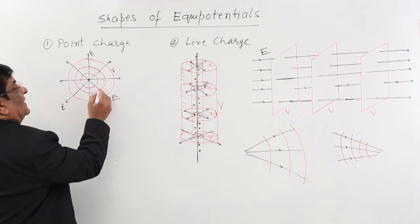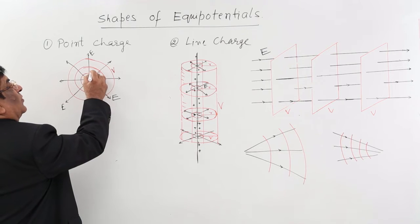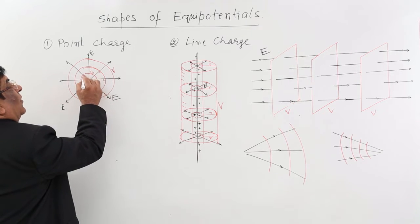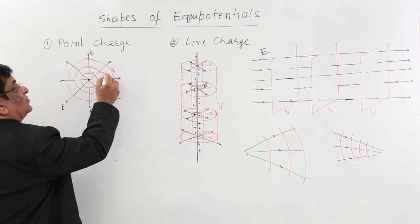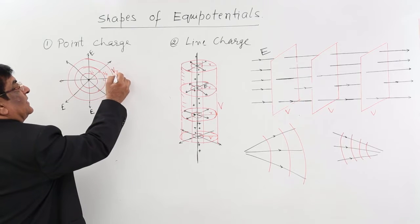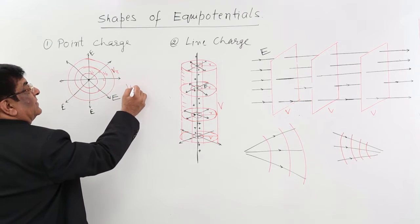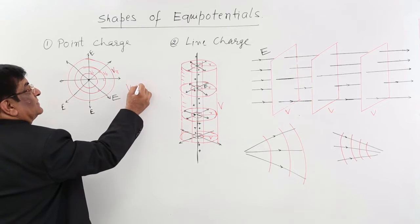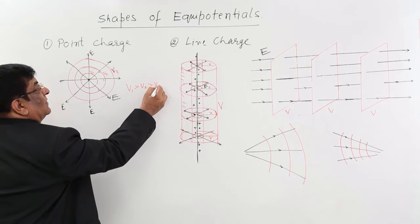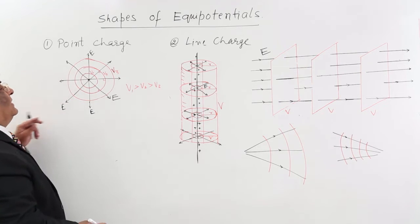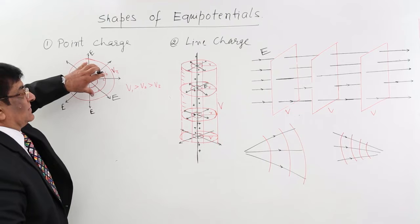So this is sphere 1, sphere 2, sphere 3. Sphere 1 has voltage V1 at all points, sphere 2 has voltage V2 at all points, sphere 3 has voltage V3 at all points, where V1 is greater than V2 is greater than V3. All these are equipotential surfaces.